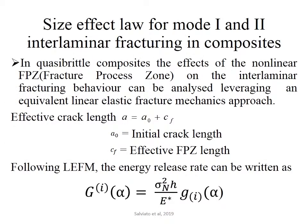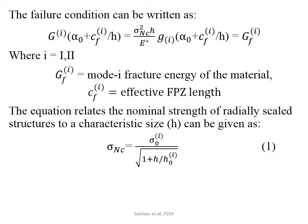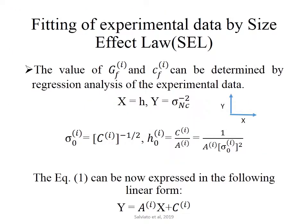This is the formulation for calculating fracture energy and effective fracture process zone length by considering the LEFM approach, where I refers to modes 1 and 2. Equation 1 gives the relationship between nominal strength and characteristic size. GF and CF values are calculated using linear regression analysis by taking thickness on the X-axis and strength on the Y-axis. A trend line of the form A1X plus C1 is obtained, from which sigma_0 and H_0 values are derived.